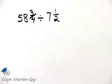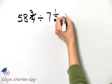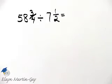So let's find fifty-eight and three-fourths divided by seven and one-half. How do we divide when dealing with mixed numbers? Well, we're going to take each mixed number and write it as an improper fraction.